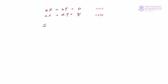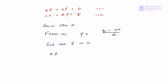We have our two equations and we'll solve for x. From equation 2, we subtract cx and divide by d, so we have y equals q minus cx, all over d. We substitute for y in equation 1, giving us ax plus b times (q minus cx)/d equals p. Multiplying through by d gives adx plus bq minus bcx equals pd.